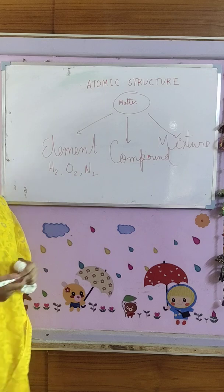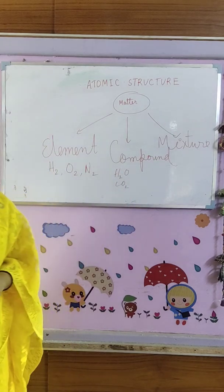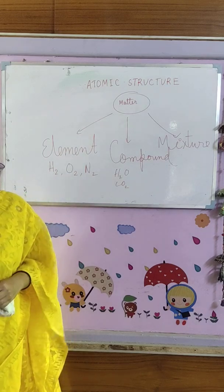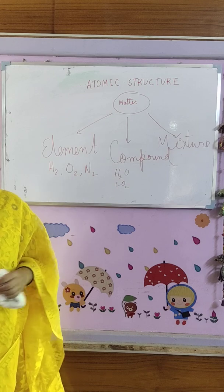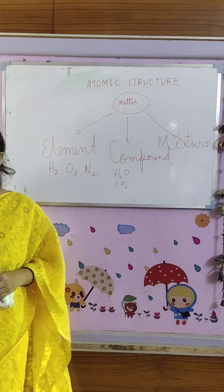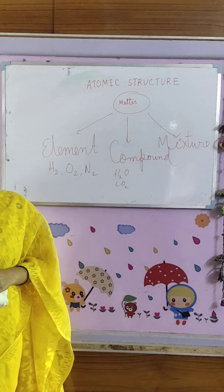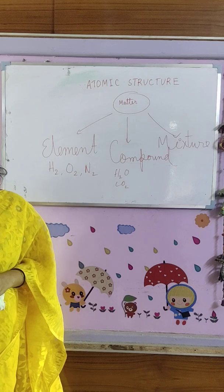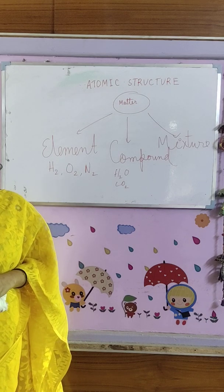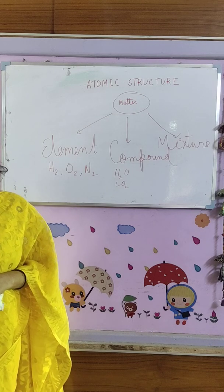Now, if two or more elements combine, we can get a compound — like water, like CO₂. And what is a mixture? Mixture is the combination of two or more compounds and elements. Around us, generally everything is a mixture. Like air is a mixture, the water that we drink is a mixture. So around us, each and everything is a mixture. Now, scientists thought that if we want to see the basic building blocks of elements, compounds, and mixtures — that is, what is the smallest particle that each and everything is made up of.